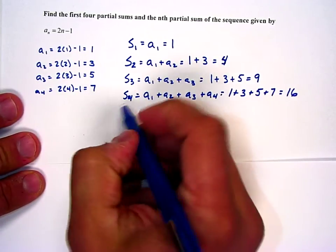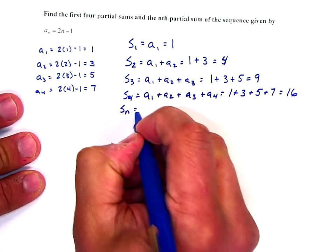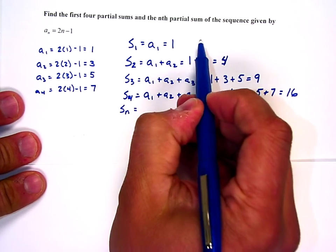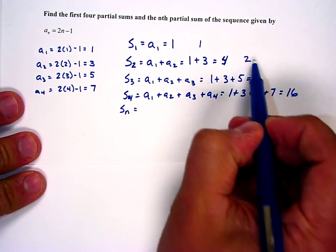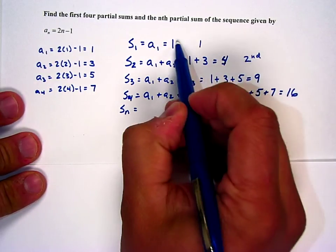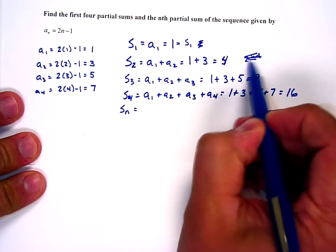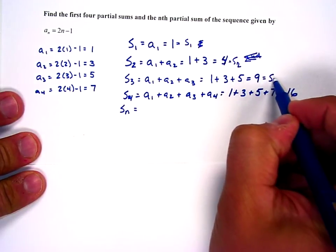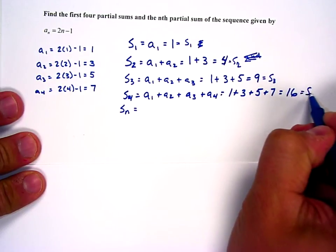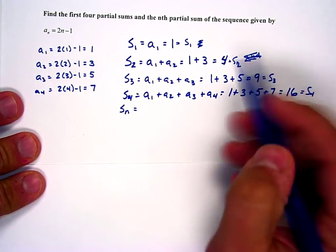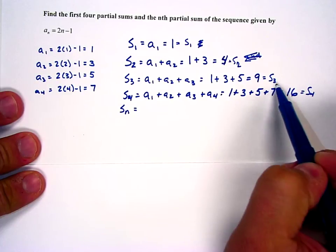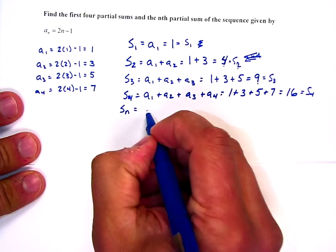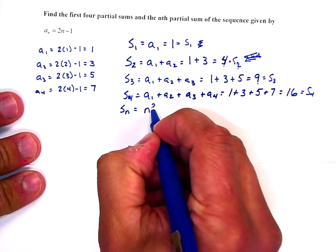Now, this is where the tricky part comes in, s sub n. So how do these relate? Well, the first sum is 1. The second sum, this is s sub 1. The second sum is 4. The third sum is 9. And the fourth sum is 16. Well, the fourth sum is 16. Third sum is 9. Second sum is 4. First sum is 1. How does that work? Well, it's n squared.